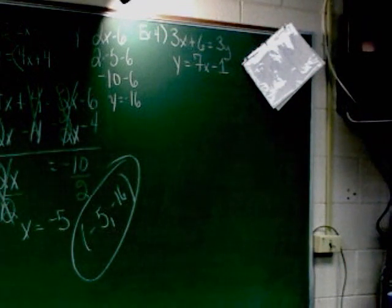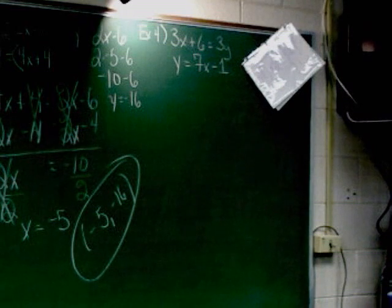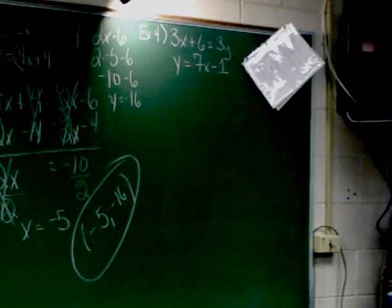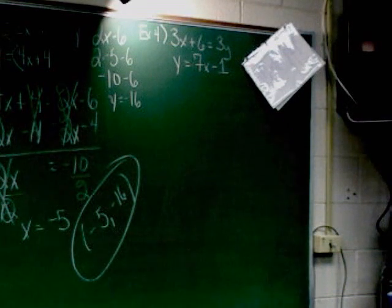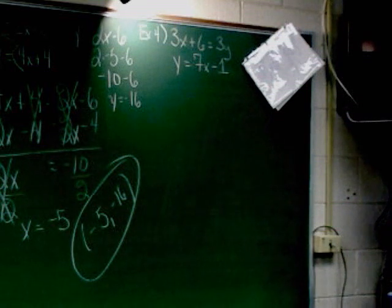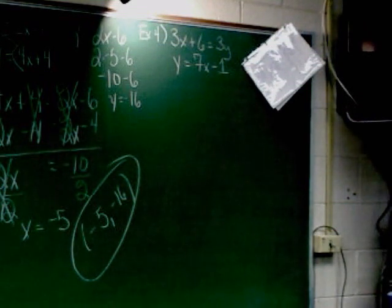Example 4: 3x plus 6 equals 3y, y equals 7x minus 1. Oh, I see why this one is okay. 3x plus 6 equals 3y, y equals 7x minus 1.